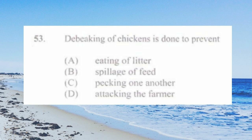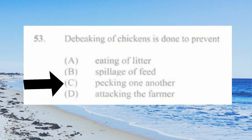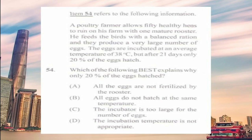Question number fifty-three: the beaking of chickens is done to prevent a) eating of litter, b) spillage of feed, c) pecking one another, d) attacking the farmer. The answer is c) pecking one another.